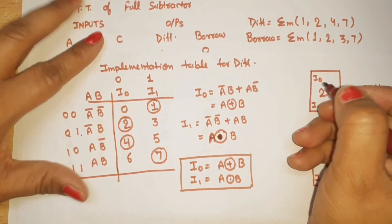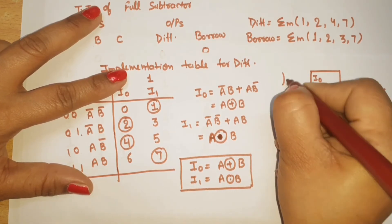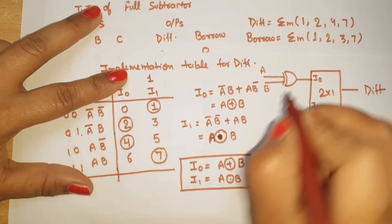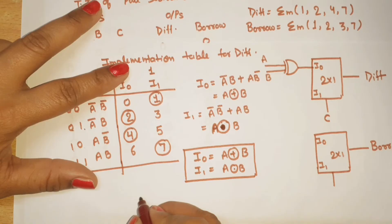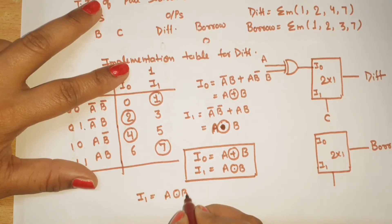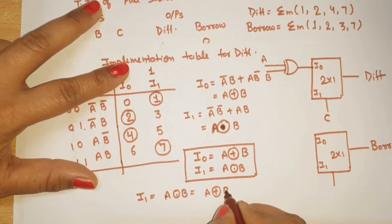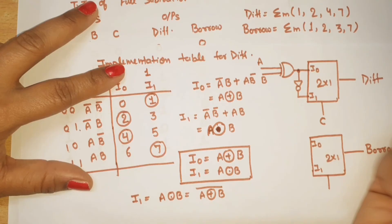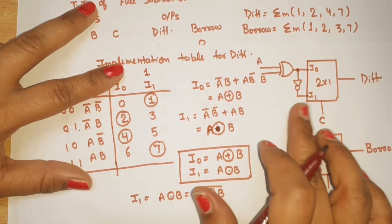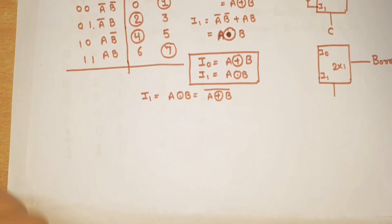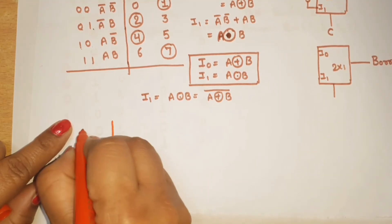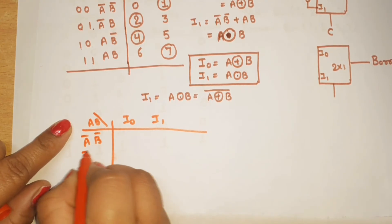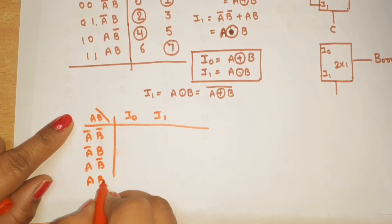Now we show the connection. For I0, the equation is A XOR B. For I1, the equation is A XNOR B. So I0 is connected to A XOR B and I1 is connected to A XNOR B for the difference output of the 2-to-1 MUX.